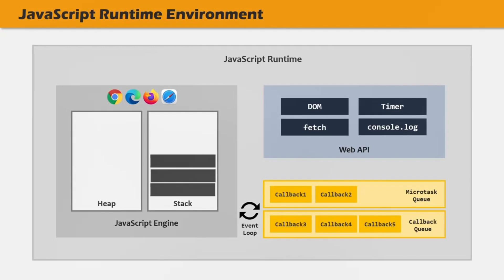So these are the four main components of JavaScript runtime when we use JavaScript in the browser: the JavaScript Engine, Web API, Microtask Queue and Callback Queue, and the Event Loop. This was a high-level overview of what JavaScript runtime is and how the runtime environment looks for a browser. Remember that JavaScript can also exist outside of the browser.